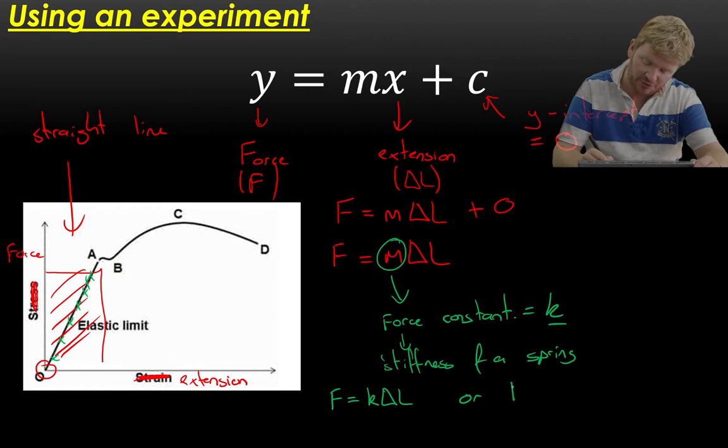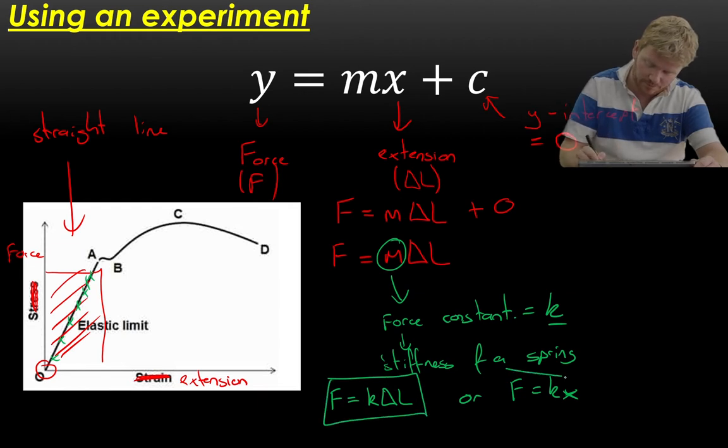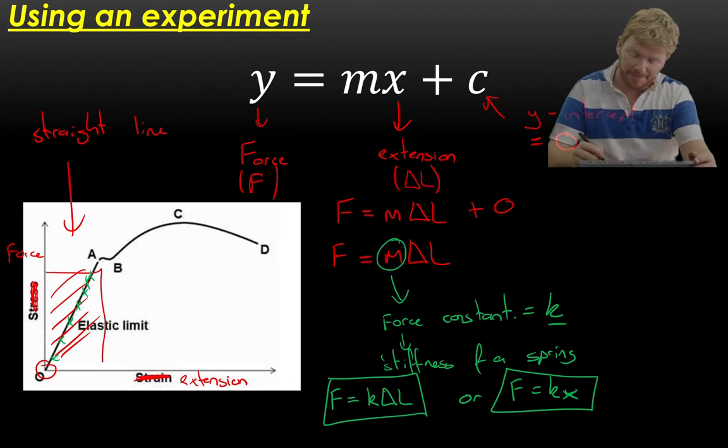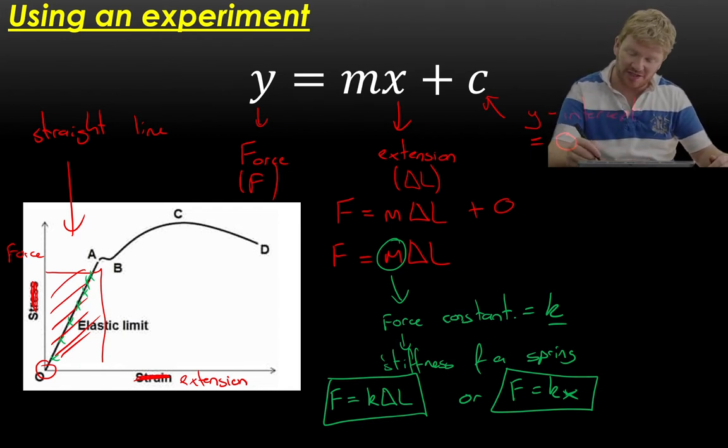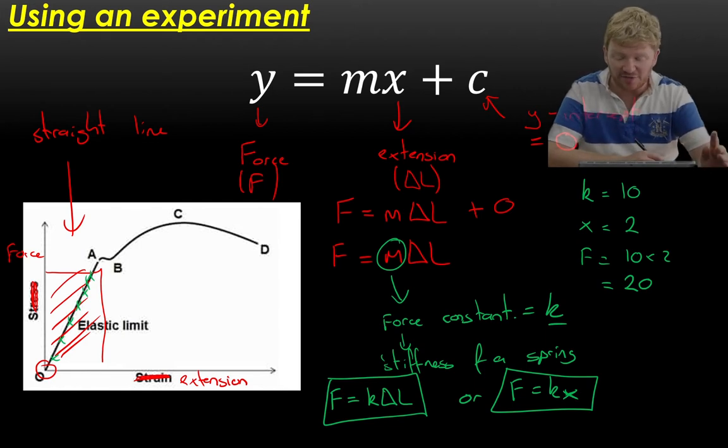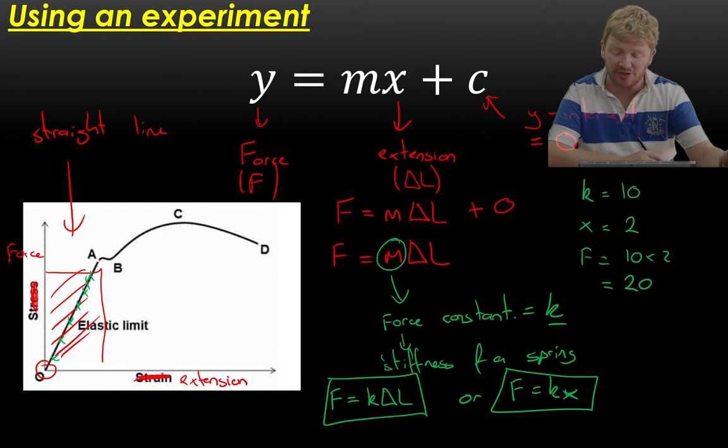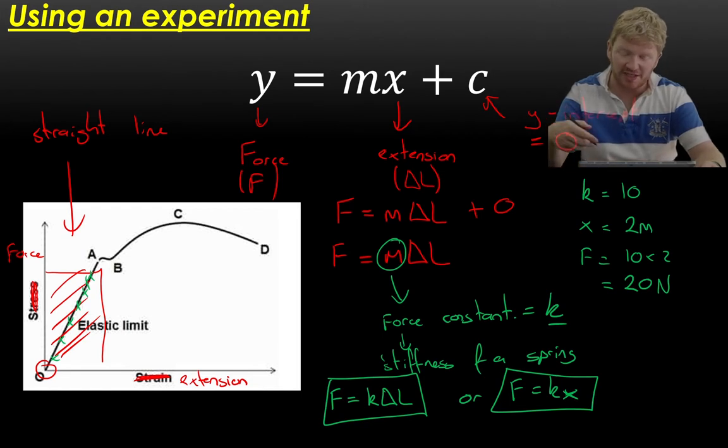So we can rewrite this as F is equal to K delta L. You might see it often written as F is equal to KX, where X is the extension. Now, what do I mean by this? What this is telling me is that I now have a constant change in my extension for any given force. So I can say, let's say K is equal to 10. If K is equal to 10, and I want an extension of 2, that means that F will be equal to 10 times 2. So that tells me I need a force of 20. Now, as I'm sure you know, it's very bad practice to just have a force of 20. We need a unit.